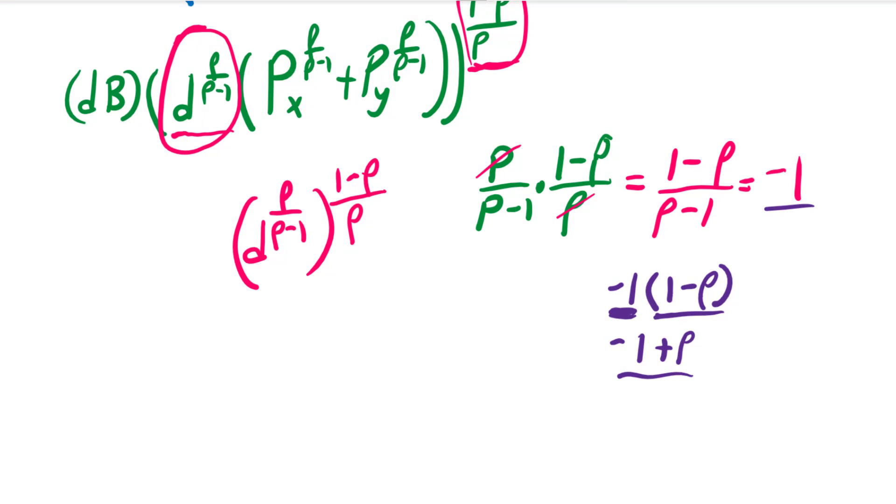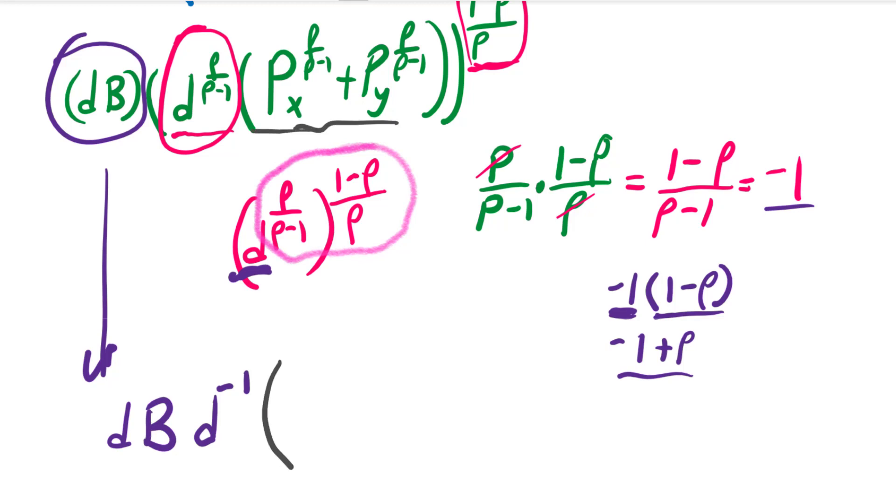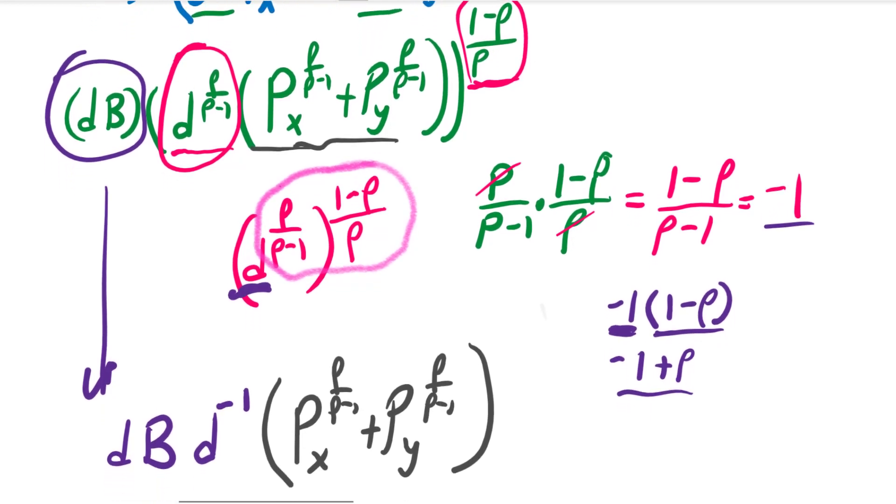Long story short, what we're going to have here is DB, D times the budget, and when we bring this D outside, it's going to end up being D^(-1). Because when we collapse those powers together and simplify it, we just get D^(-1). And then we're still going to have all this stuff on the inside here: the price of X and the price of Y, ρ/(ρ-1), plus the price of Y, ρ/(ρ-1), to the (1-ρ)/ρ power.